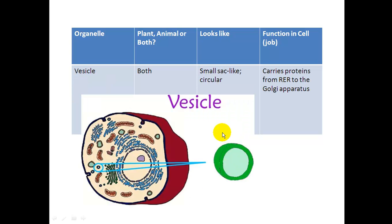The next one I mentioned was a vesicle. Vesicles are those little taxicabs that I just mentioned that go between the ER and the Golgi body. So they carry the protein from the RER to the Golgi body or Golgi apparatus. It is in both plants and animal cells. You can see it right here. It's just a small little circular sac-like organelle.